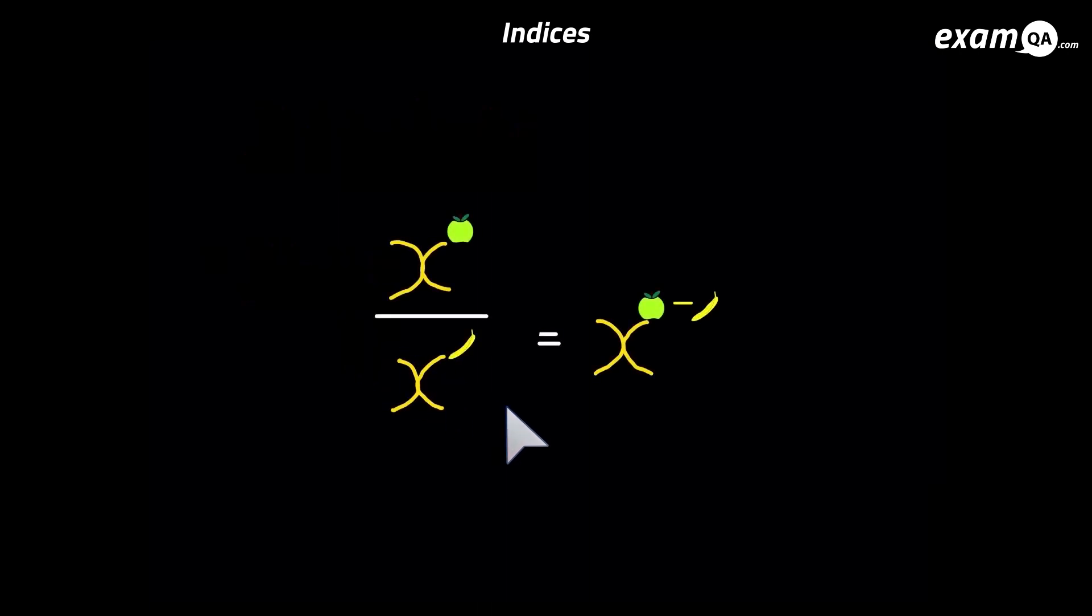Now here we've got dividing. Whenever you have it as a fraction like this all it means is they're dividing each other. And when you're dividing instead of adding the powers you subtract them. So we've got x to the power of apple divided by x to the power of banana. And of course that equated to x to the power of the apple minus the banana. All these apples and bananas are making me feel really healthy. Three more fruits and I'll have my five a day.